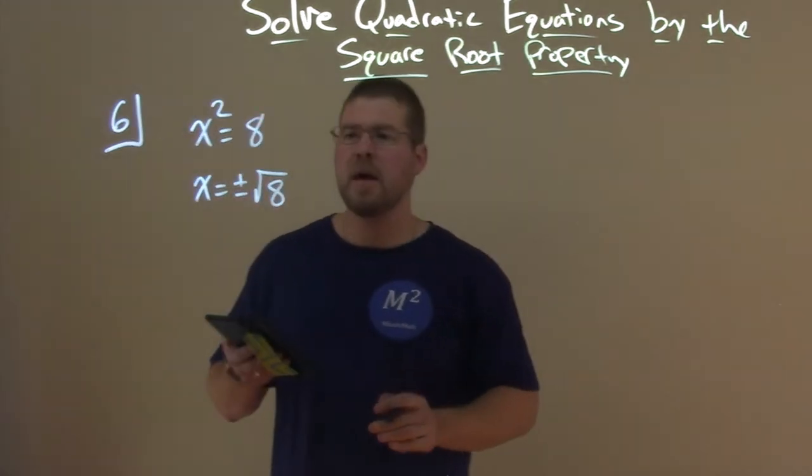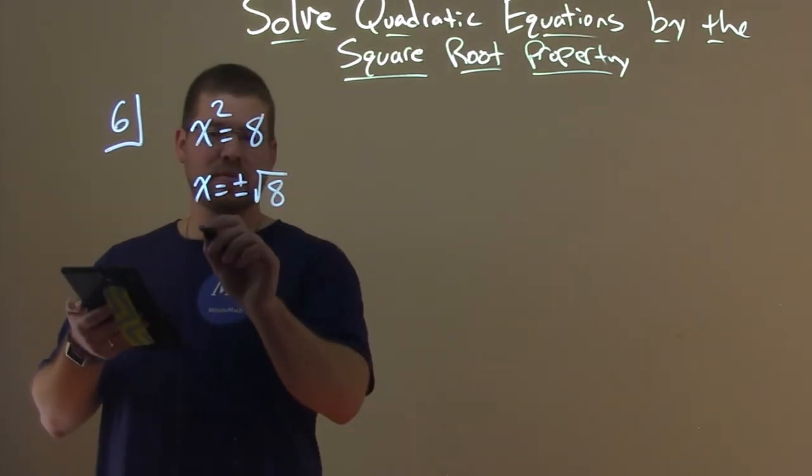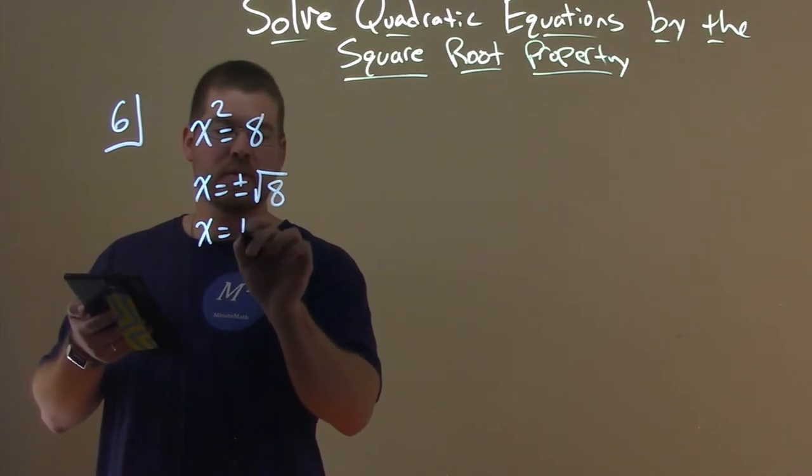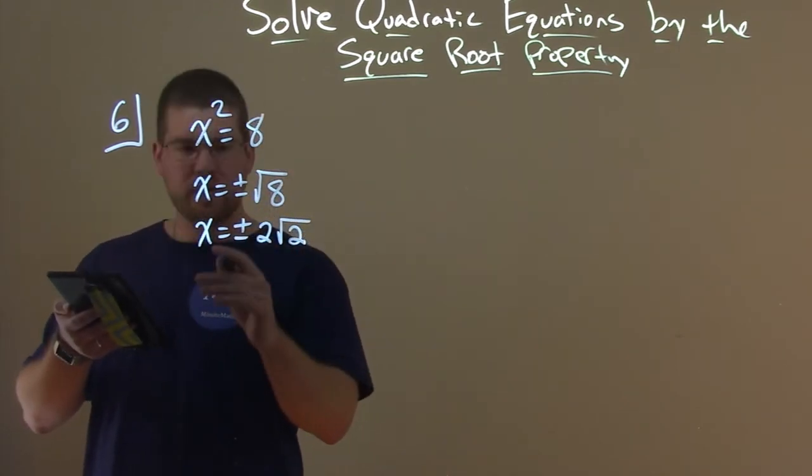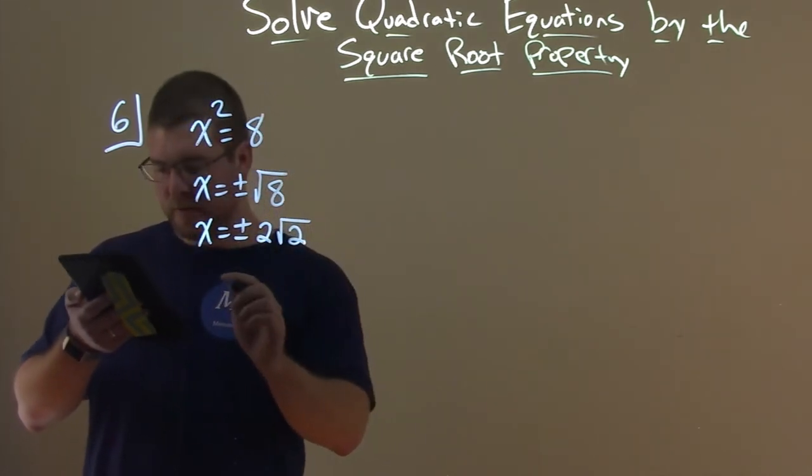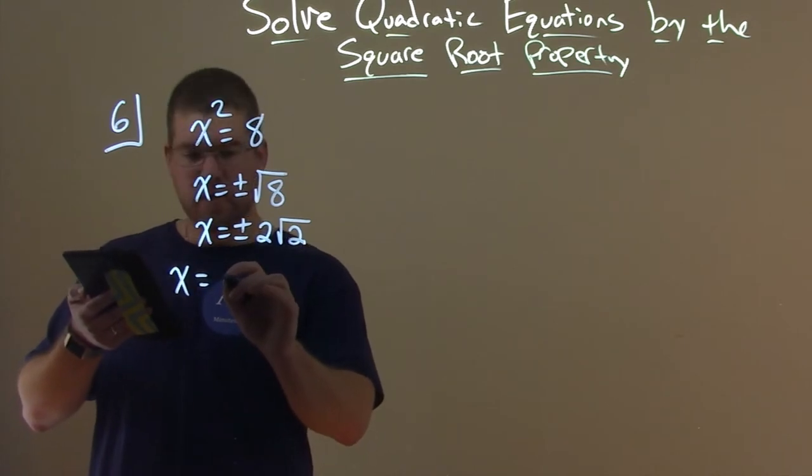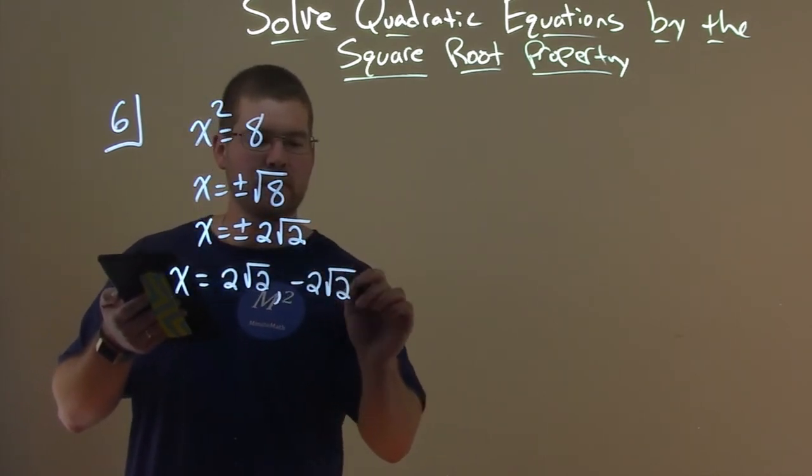And then now we need to simplify still, square root of 8 is 2 square root of 2. So x equals plus or minus 2 square root of 2. So our two values, remember that plus or minus here, is both individually. We're going to say our two solutions are x equals 2 square root of 2, and then negative 2 square root of 2.